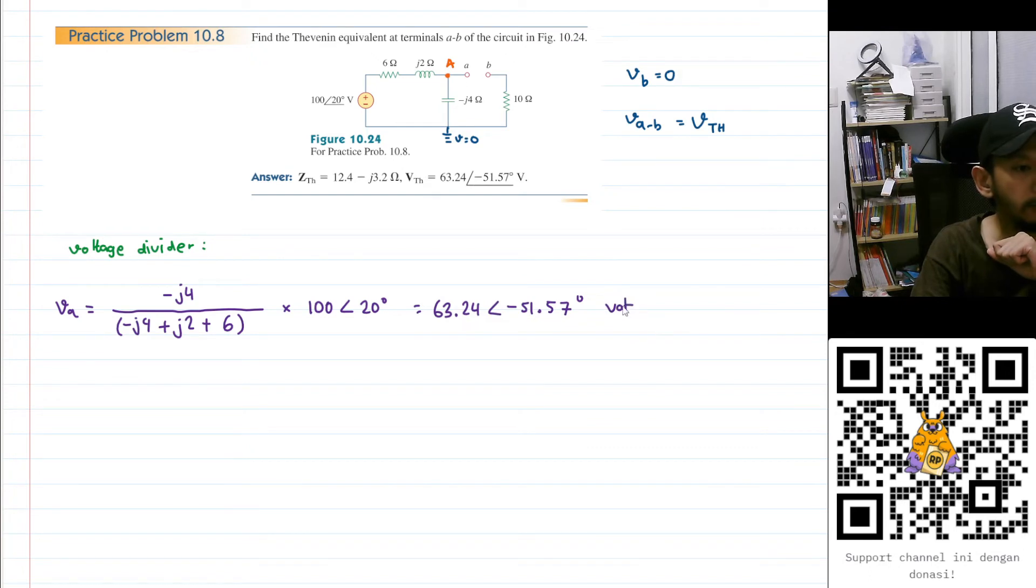We know that VAB is VTH, so I will have VTH is just VA minus VB, but VB is zero. So I will have VTH is the same as VA: 63.24 angle minus 51.57 degrees, the unit will be volt. This is the Thevenin voltage.